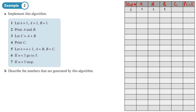Step two says print a and b, so we write down the values of a and b. Step three says let c equal a plus b — the variable c is going to equal the sum of a and b, which is one plus one, giving us two.